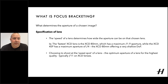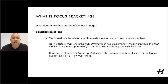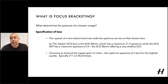Also, the specification of the lens can determine the aperture used. The speed of a lens determines how wide the aperture can be. For example, the two images we just saw were taken with the XCD 80mm lens — our fastest lens in the XCD range, offering a maximum 1.9 aperture — while the XCD 45P has a maximum aperture of F4. You can also choose to shoot at the sweet spot of a lens. Typically, F11 on an XCD lens is the sweet spot for ultimate focus and quality.